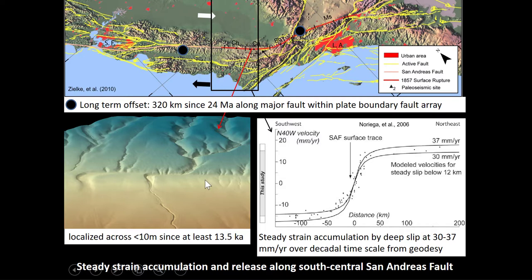Here's a little more information about the San Andreas. California is tipped on its side. These two black markers show blocks of rock that used to be contiguous 24 million years ago, and this western side has been sheared along the fault by 320 kilometers. At intermediate timescales — like 10,000 or 13,000 years — we see an offset stream channel showing this continued motion and localization.